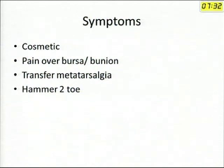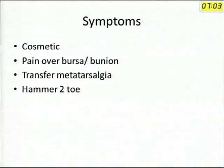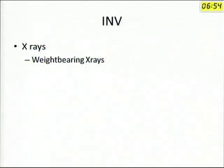Symptomatically, it is mostly a cosmetic deformity, but not purely cosmetic. Patients can get pain over the bursa or the bunion. You can have transfer metatarsal pain — a very common symptom. With hallux valgus, the first metatarsal elevates a bit, so the lesser metatarsals start to bear more weight, causing pain over the lesser metatarsal heads. This is called transfer metatarsalgia. When hallux valgus becomes severe, it pushes the second toe out of the way causing a hammer toe deformity, which is commoner in the second toe. All you need is a weight-bearing X-ray for investigation.